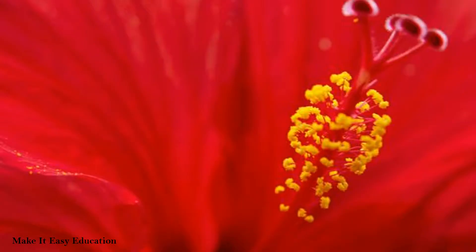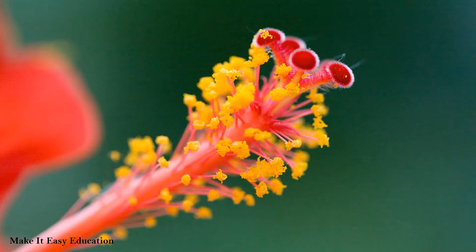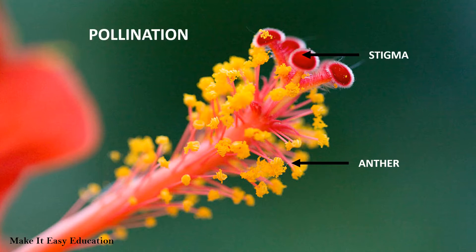The anther of the flower has fine yellowish powder called pollen. The pollen is transferred from the male part of the flower, that is the anther, to the female part of the flower, that is the stigma. This is called pollination.